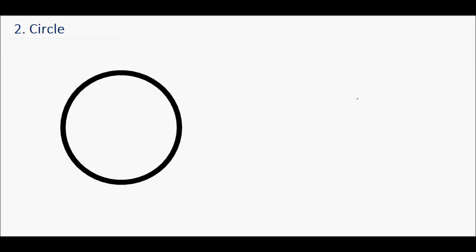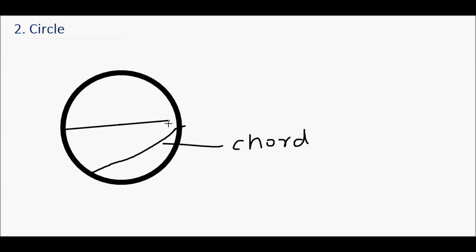Now let's learn about the circle. You know how to draw a circle — you can take a small bowl or a bangle and just put a pencil around its circumference. In a circle, if you draw any line like this, it is called a chord. If this chord passes through the center of the circle, then it is called a diameter.